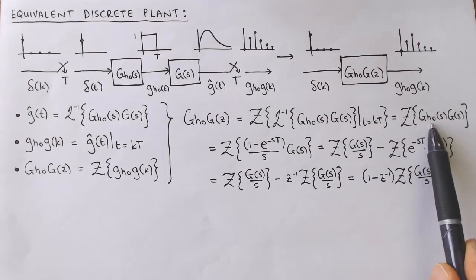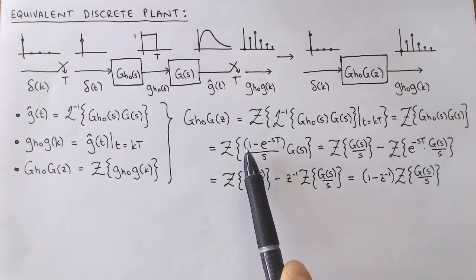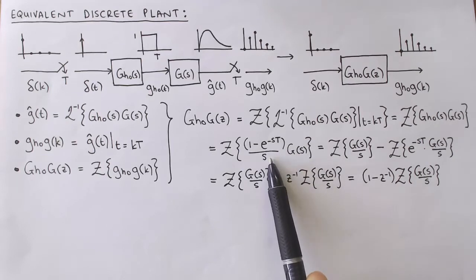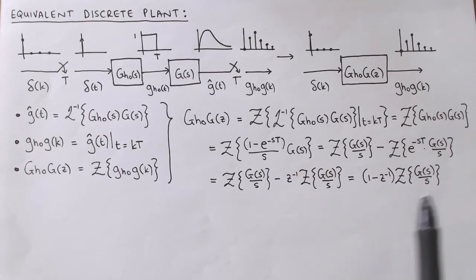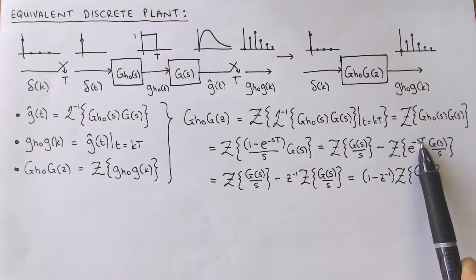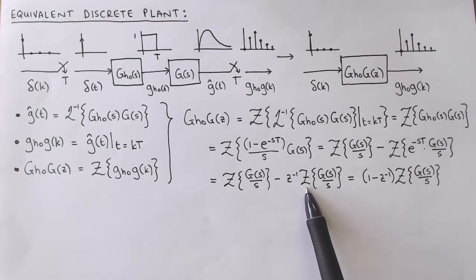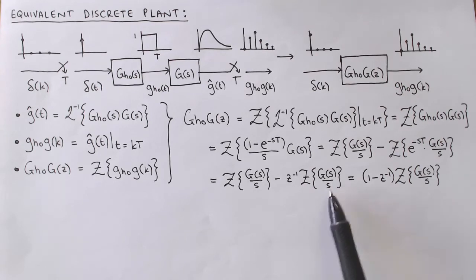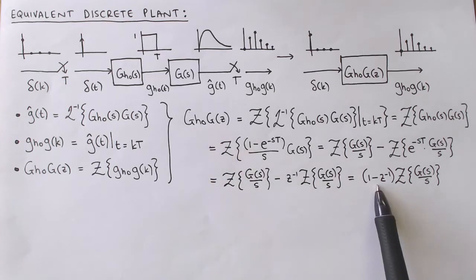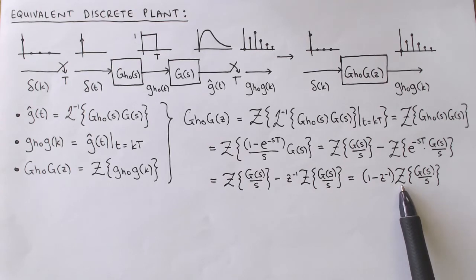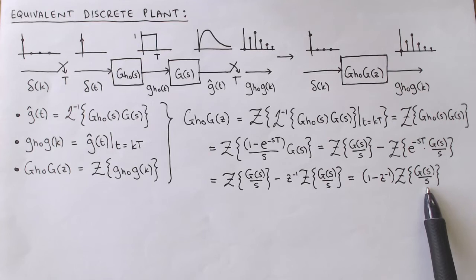We previously calculated the transfer function of the zero-order hold circuit as (1 − e^(−sT))/s, which means we can separate the Z-transform into two terms. e^(−sT) corresponds to a one sample period delay, and we can therefore write the second term as Z^(−1) times the Z-transform of G(s)/s. After combining the two terms we see that the equivalent discrete plant is given by (1 − Z^(−1)) times the Z-transform of the continuous plant transfer function divided by s. This result is the same as the step invariant discretization we've looked at before.